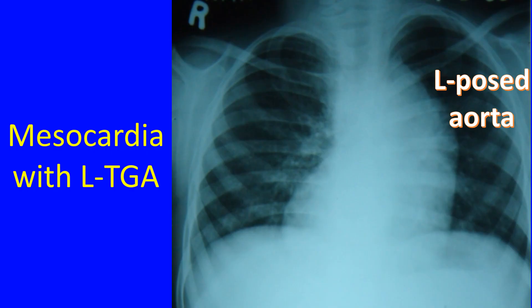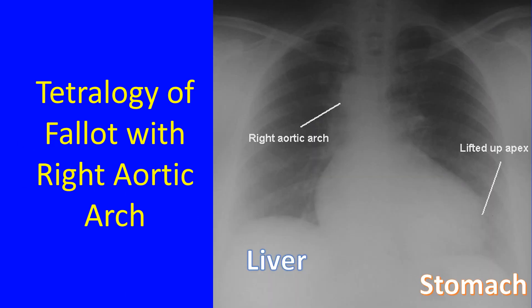Here is a chest X-ray in mesocardia and levo-transposition of great arteries, with the L-posterior aorta seen as a bulge along the left upper border. Here is another chest X-ray showing right aortic arch in tetralogy of Fallot and a lifted-up right ventricular type of apex.